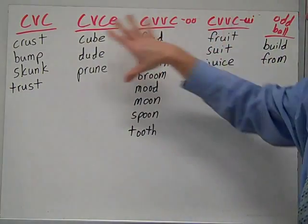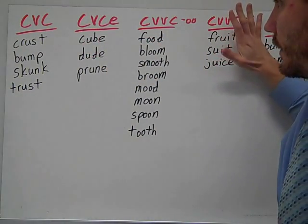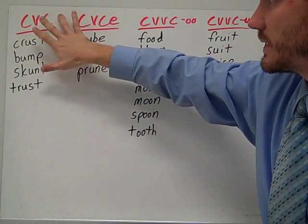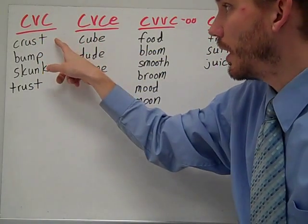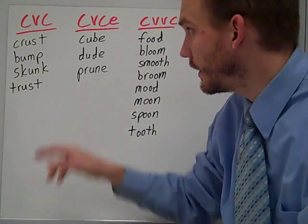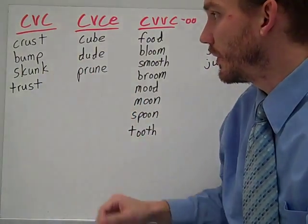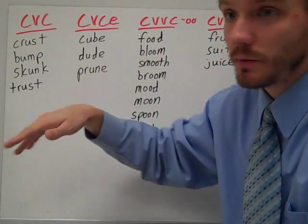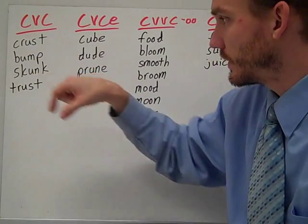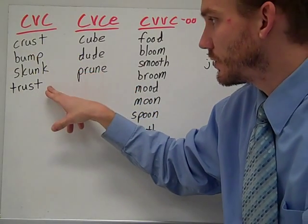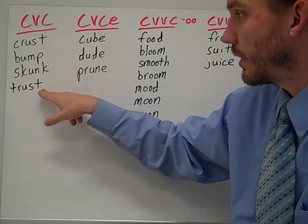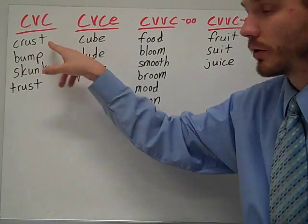Let's go through these. CVC short U words: crust, like the outside of something — maybe the crust of a pizza or bread. Bump, like a bump on your head or a speed bump. Skunk, that black animal with the white stripe that sprays the smelly stuff. Trust, like when you believe in someone, you trust them.